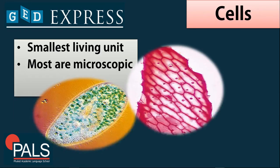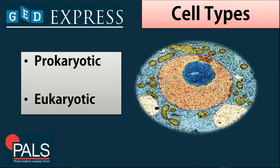We begin with the definition of a cell. As we all know, a cell is the smallest living unit and most of them are microscopic in form. Now, for cell types, we have prokaryotic and we have eukaryotic.